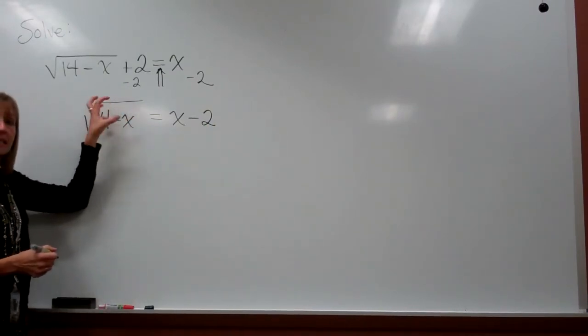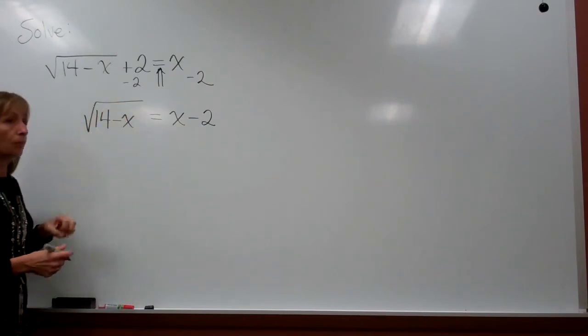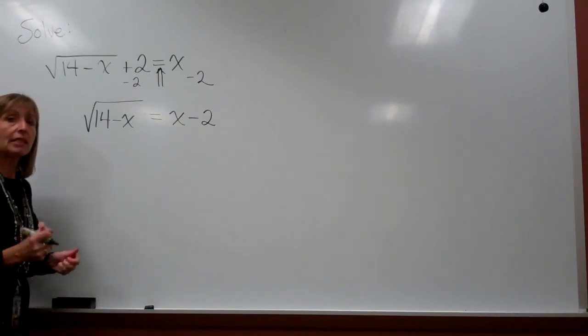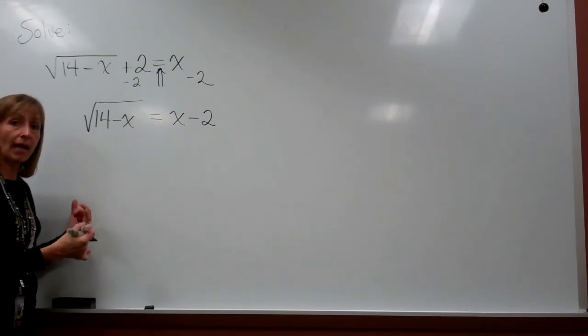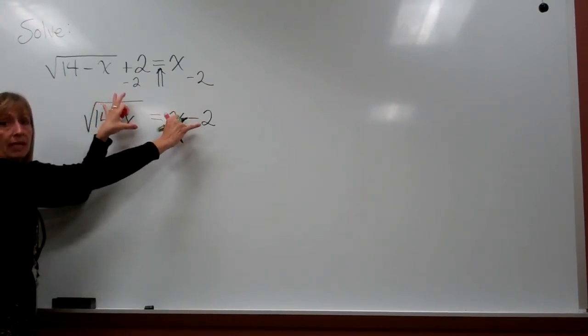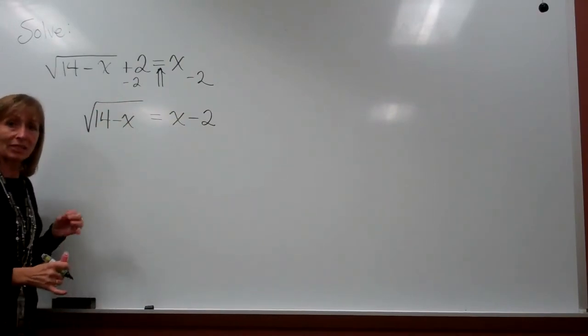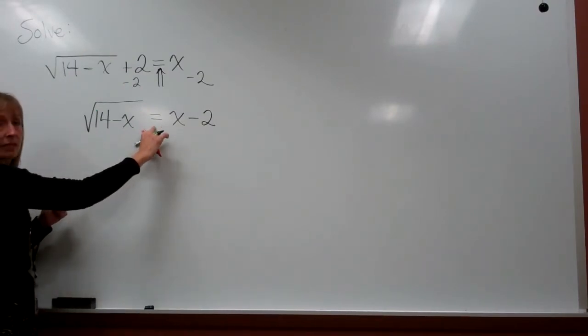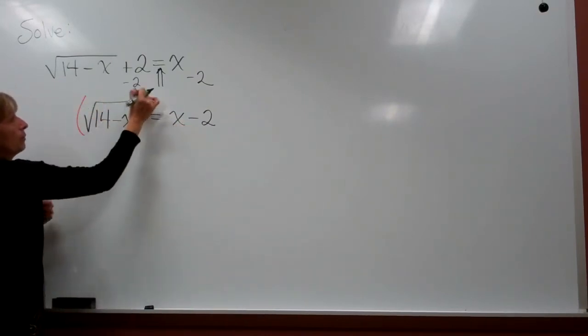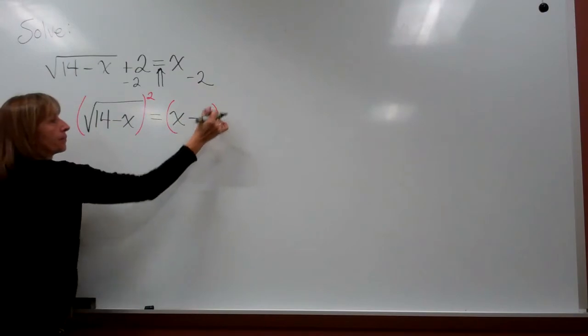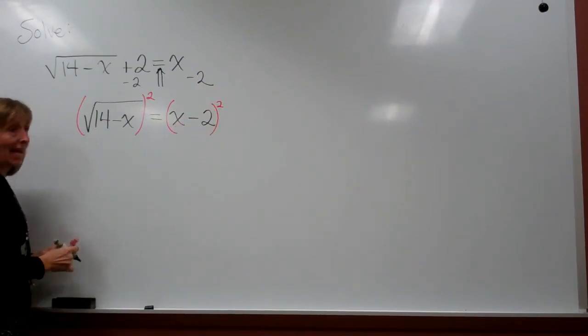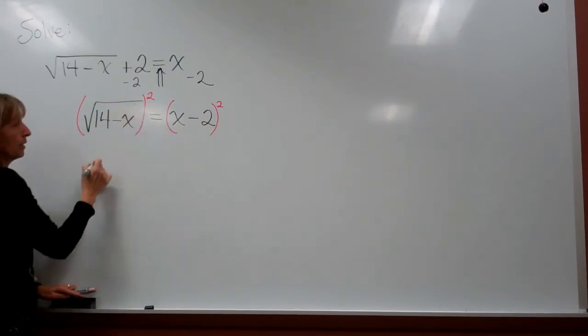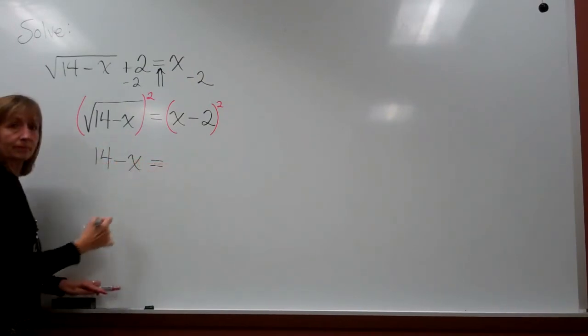We have the square root taking the entire left-hand side so that we can undo the square root by raising both sides to the power that matches the index. You can only raise to a power to get rid of the radical if you have an equation, and you can do the process to both sides. We will raise both sides to the second power. On the left-hand side, the square root of 14 minus x, quantity squared, the square undoes the square root, and we are left with 14 minus x.